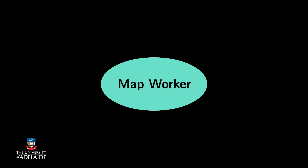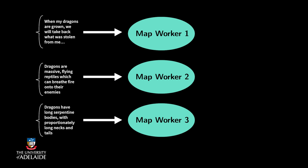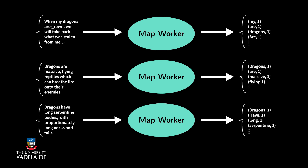Each map worker is given a unique part of a book that fits in its memory. Then it separates the text into words. For each word — dragon as an example — it produces a key-value pair. Dragon is set as the key and the constant one as the value. After all map workers process their text, I gather all key-value pairs and sort them by keys.